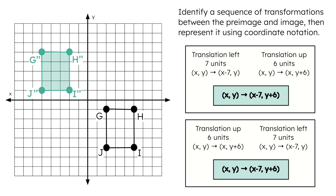Both of these sequences did only involve translations. What about for sequences with reflections or rotations? Will different approaches still simplify to the same coordinate notations?